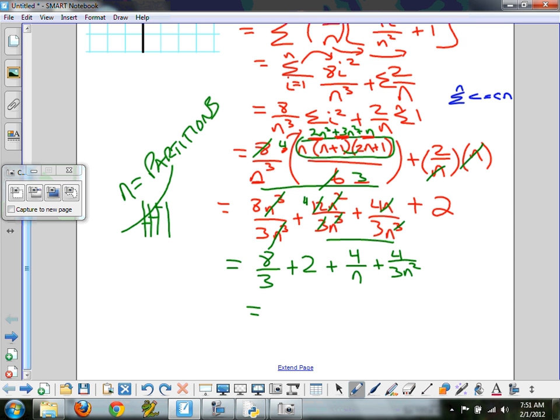So this is part of the answer that we often look for. I'm going to clean this up one little bit more. 8 thirds is 2 and 1 third. So we really have 4 and 1 third plus 4 over n plus 4 over 3n squared. So this is an answer we're often looking for. You can plug and chug a 1 in here. And you're now going to get a pretty close example of the answers that we were getting above.